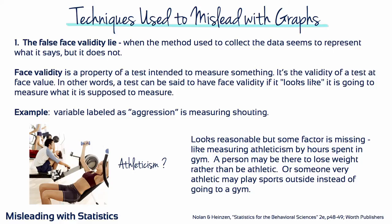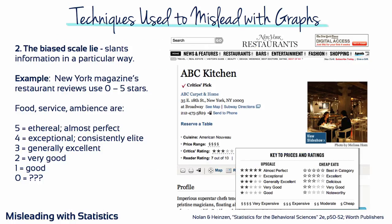Some fairly happy families shout almost all the time, and many quiet families exchange polite comments with lethal intentions. Number two: the biased scale lie. A biased scale slants information in a particular way. For example, New York Magazine's restaurant reviewers use a scale of zero to five stars. Five stars indicate a restaurant's food, service and ambience are ethereal, almost perfect. Four stars mean exceptional, consistently elite. Three means generally excellent. Two means very good. And one means good.